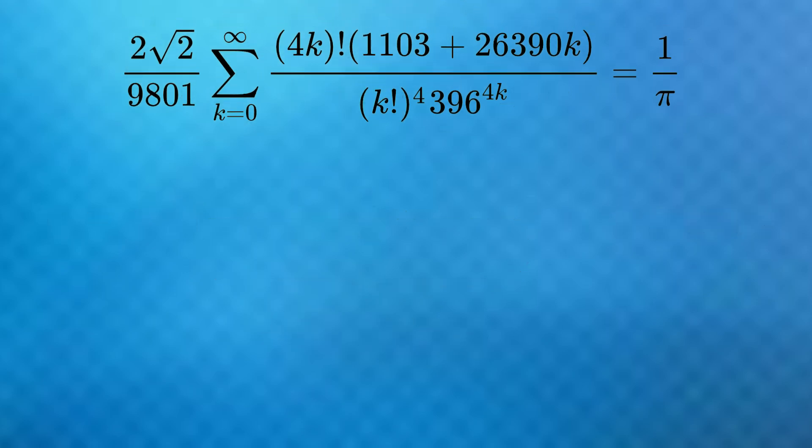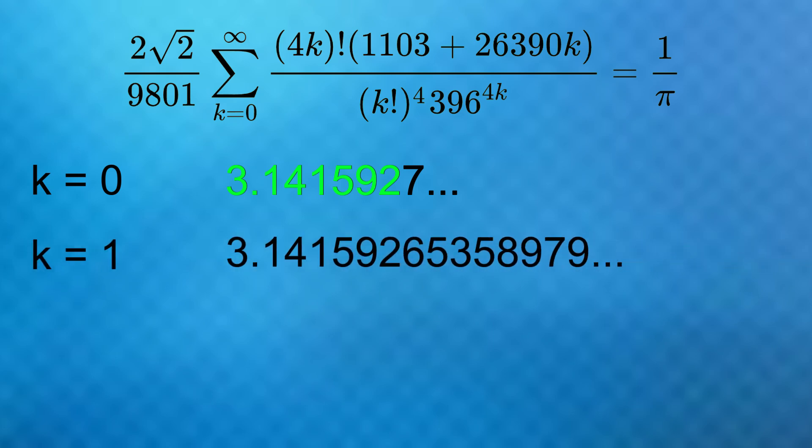With Ramanujan's formula, once you're one term in, just plugging in k equals 0, you get 3.1415927 and so on. The 3 and the first 6 digits after the decimal are already correct. Once you add another term, the approximation gets the first 15 digits right, and every new term after adds about 8 more decimal places of precision.